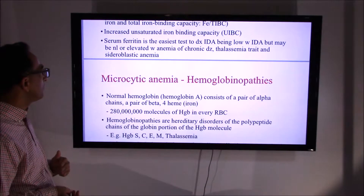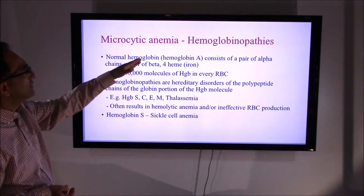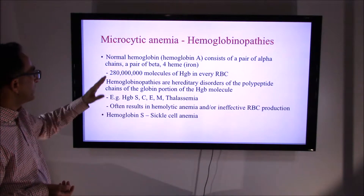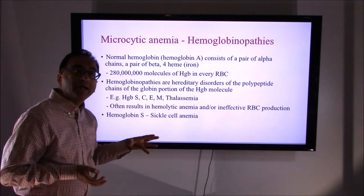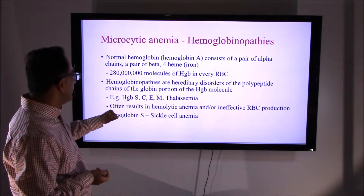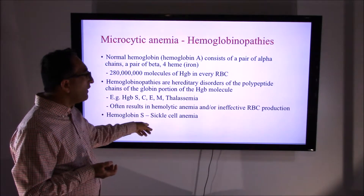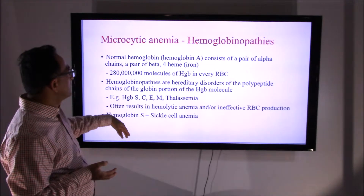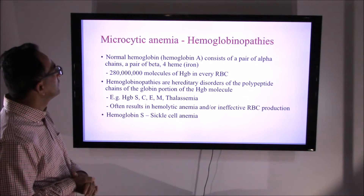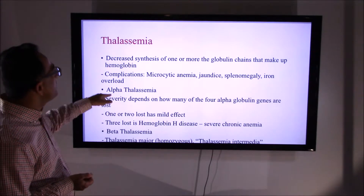Another important concept in microcytic anemia is its association with hemoglobinopathies. Sickle cell anemia, for example, requires both abnormal alleles — not just one. The abnormally shaped cells clog capillaries and lead to anemia. This is a complex subject that will be covered in a separate dedicated presentation.